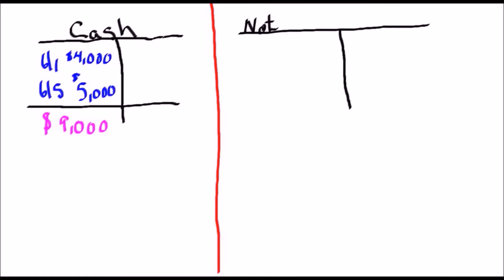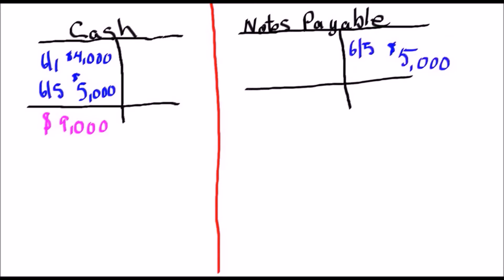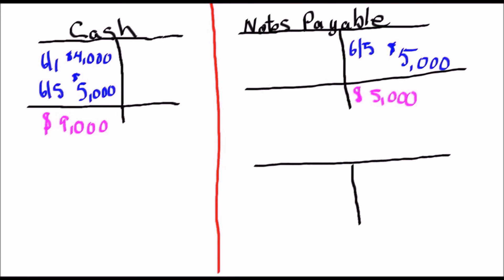Let's take a look at the other accounts we also used in June. One account was called Notes Payable, which is a liability account. For that account, on the 5th of June we took on an additional loan from the bank of $5,000. So our liability account went up by $5,000, and by the end of June we have a balance in Notes Payable of $5,000.